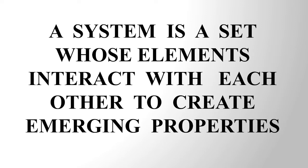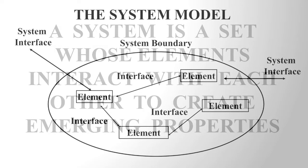Inherent in this definition is the system model, shown in this diagram. We have the elements that make up the system, separated from those things that are not elements of the system by the system boundary - the boundary being a consequence of however we have defined the set. What makes a system different from other types of set is that in a system these elements are connected to each other. We call these connections interfaces, and through these interactions they do things together that they cannot do alone.